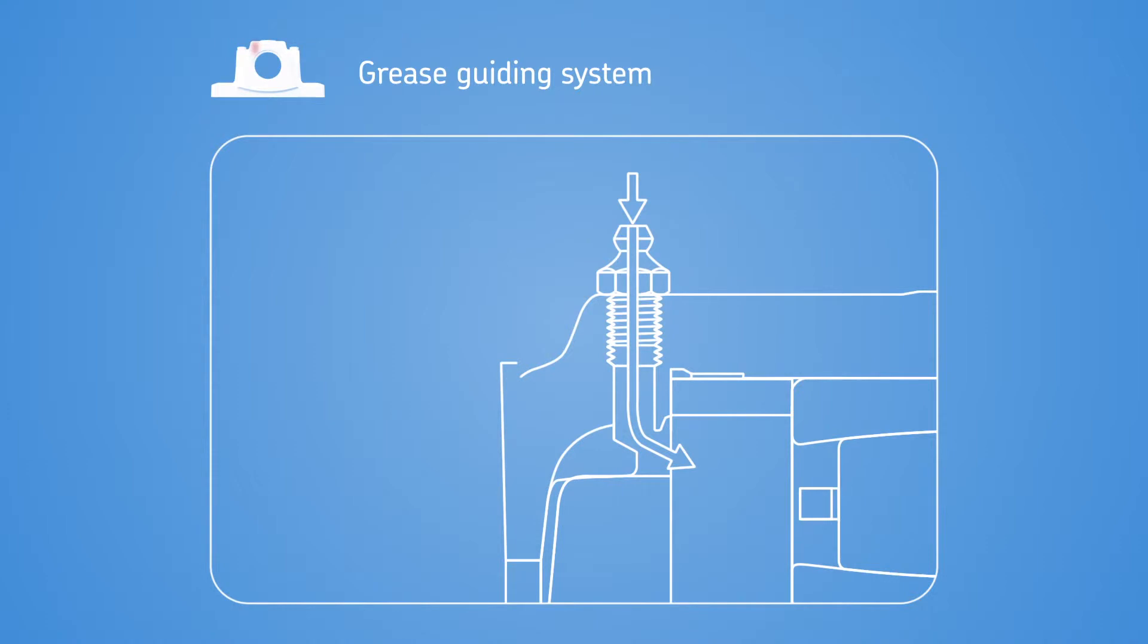For more efficient lubrication, SE housings have an integrated flange that guides grease from the grease fitting directly to the bearing.